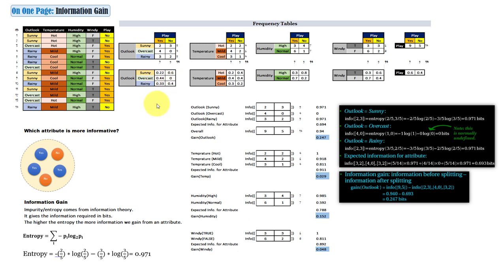We can do the same thing for temperature, which has hot, mild, and cool; for humidity with high and normal; and for windy which is true or false. The overall probability of yes is nine over 14, which is approximately 0.64, and no is five over 14, which is approximately 0.36.